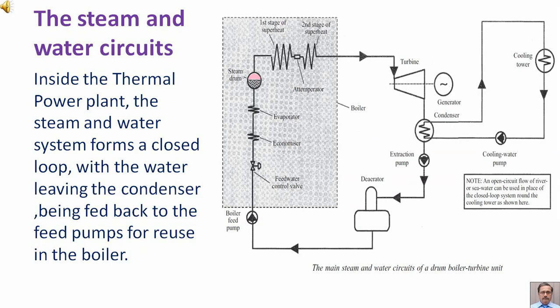The steam and water circuits. Inside the thermal power plant, the steam and water system forms a closed loop, with the water leaving the condenser being fed back to the feed pumps for reuse in the boiler.